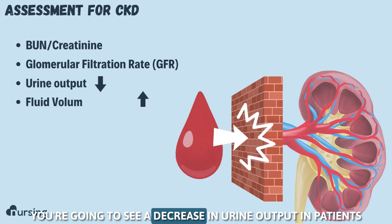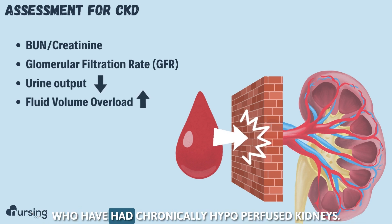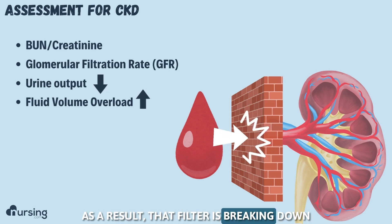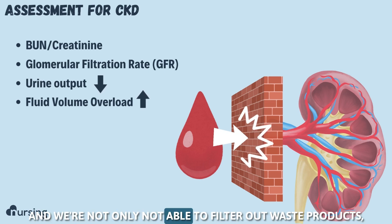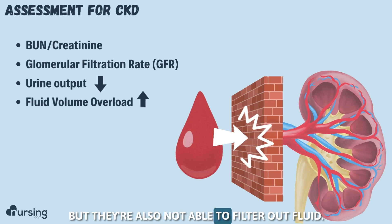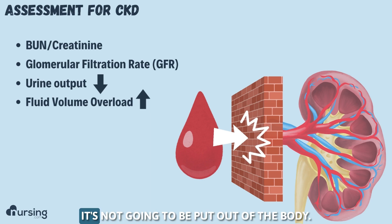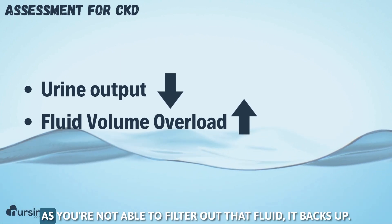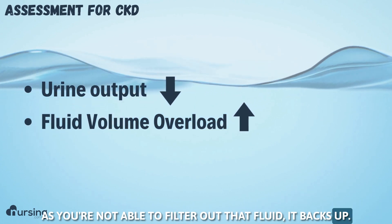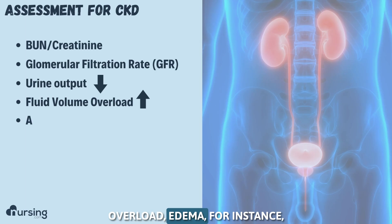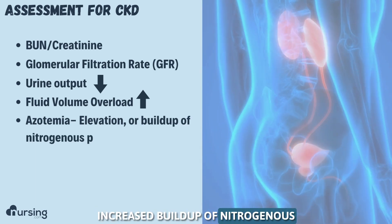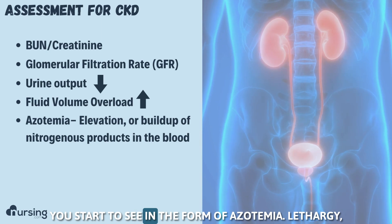Urine output — you're going to see a decrease in urine output in patients who have had chronically hypoperfused kidneys. For a long period of time, blood has not gotten to those kidneys. Therefore, the kidneys are now failing. That filter is breaking down, and we're not only unable to filter out waste products, but we're also unable to filter out fluid. So fluid is going to back up, resulting in decreased urine output, increased fluid volume overload, edema, and azotemia — as you have a continual buildup of nitrogenous waste products in the body.